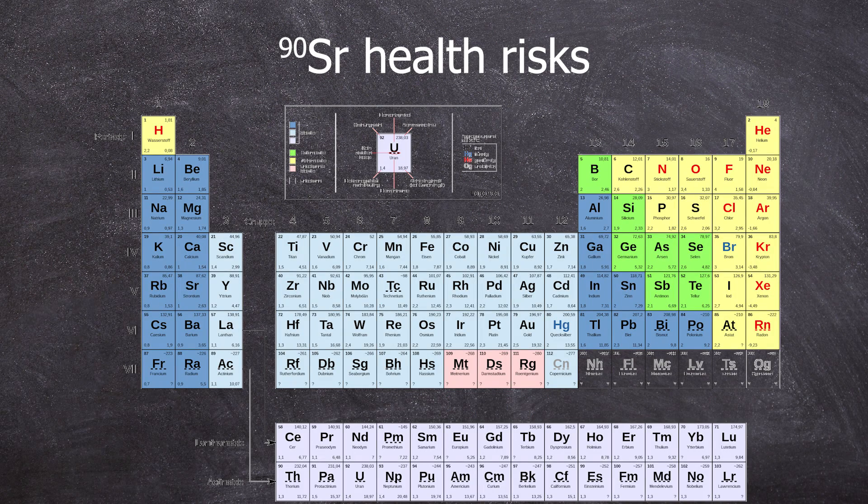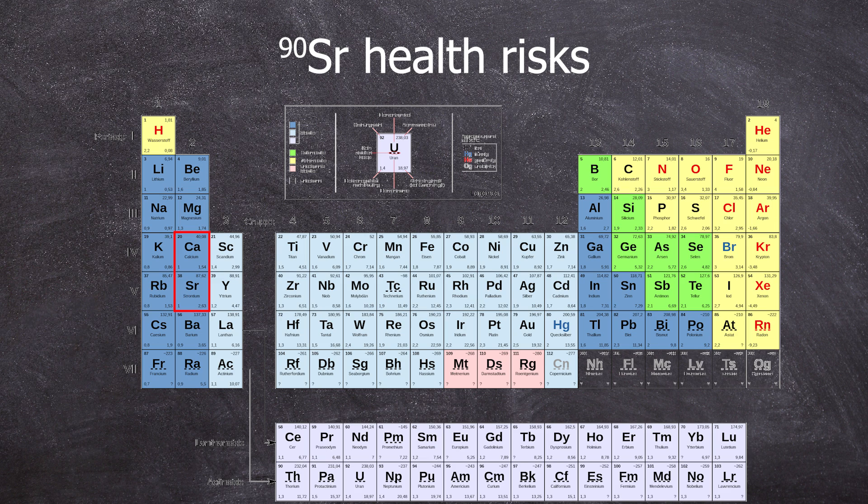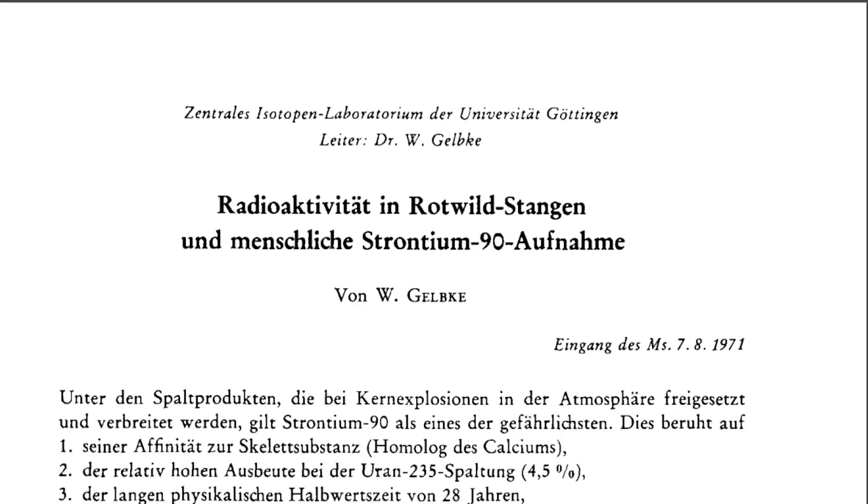A glance at the periodic table shows that it is the heavier homolog of calcium. And as you know, calcium is needed for strong bones, but not radioactive strontium-90. Unfortunately, its chemistry is very similar.